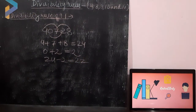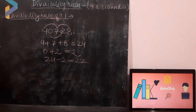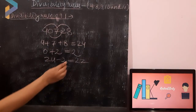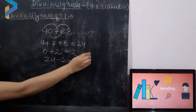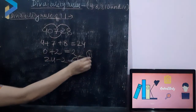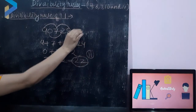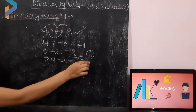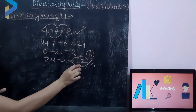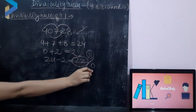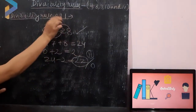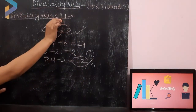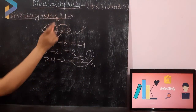Is 22 divisible by 11? Yes, you all are right — 22 is divisible by 11, it comes in the table of 11. So this number is divisible by 11. If we had gotten 0 instead of 22, that would also mean the number is divisible by 11.